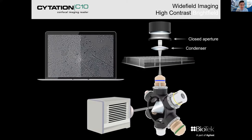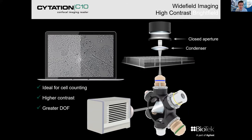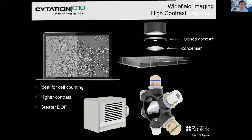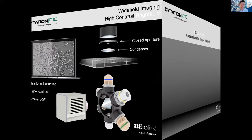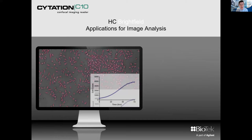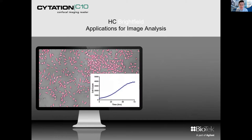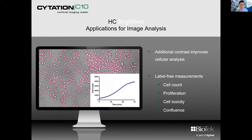What BioTek has pioneered is a high contrast bright field method with a closed aperture condenser, which is ideal for cell counting, high contrast, and greater depth of field. This is a great application for image analysis through the Gen5 platform — adding contrast which improves cellular analysis for label-free measurements like cell counts, proliferation, and cell toxicity.